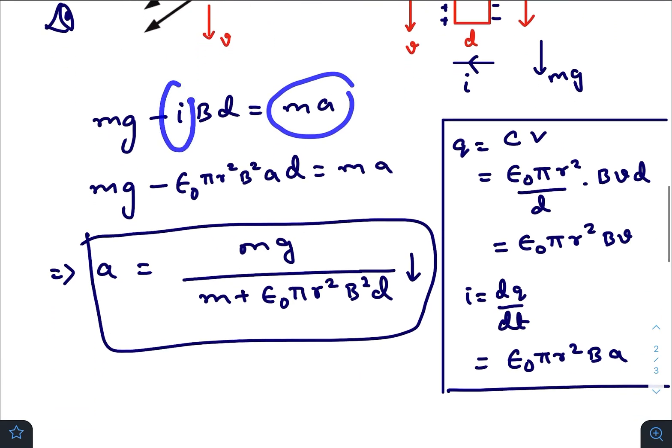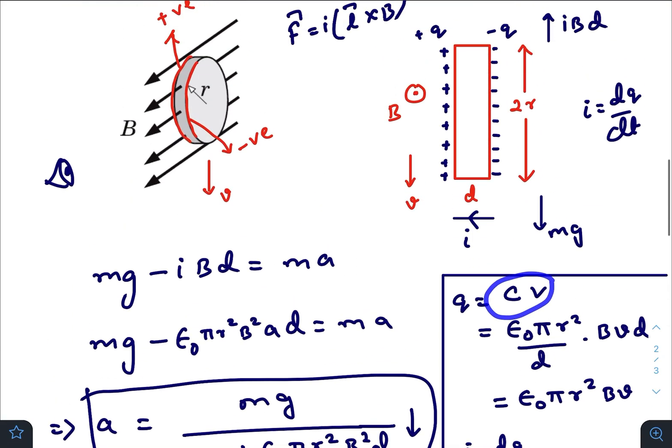Now, here we need to find out the value of I, the effective current flowing through the plates. So we know at any instant, Q is equal to C times V. What is C?